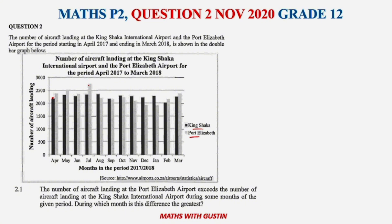A quick check on the graph: the highest numbers were in July, and the lowest numbers were in February — I'm assuming this is February 2018. Now let's go ahead and answer Question 2.1.